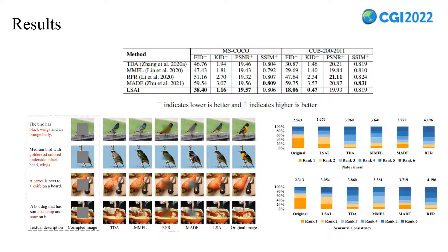In particular, we conduct qualitative evaluations with a ranking game to evaluate the naturalness and semantic consistency. The ranking score distributions of the approaches are shown in the figure on the right side, from which we can observe that the proposed LSAI achieves ranking scores quite close to the ground truth on both aspects, outperforming the baselines significantly.